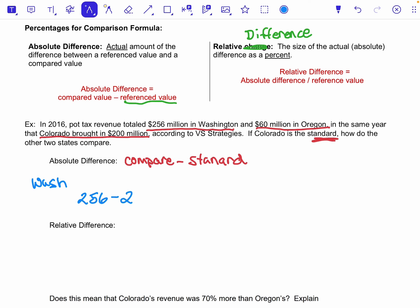Which would get me 56. And you might be going, well what does that mean? Well, Washington made $56 million more than Colorado. That's what that means. That's what an absolute difference means.